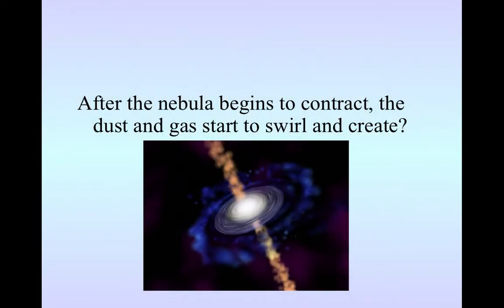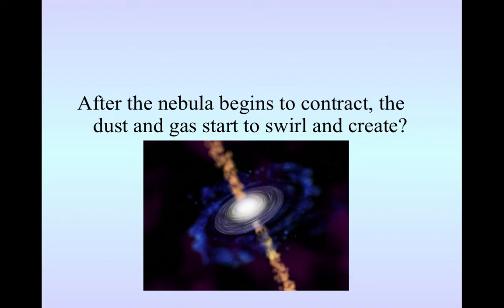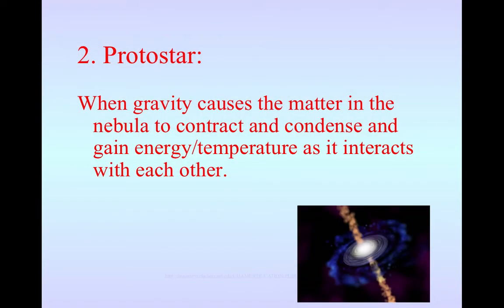Now after that nebula begins to contract, so something's got to get that dust and gas moving, it starts to swirl, and our next stage before we turn into that burning ball of nuclear fusion, first we start as our protostar. Proto meaning before and you can remember that if you think about a prototype. It's not the final draft. It's what you build before you make your final version of something. And our protostar is when gravity causes all that matter to contract within the nebula and it condenses.